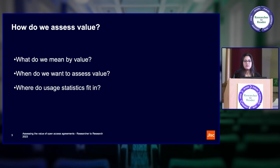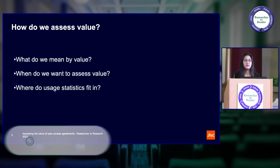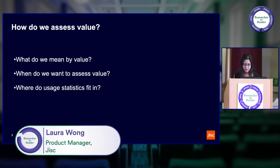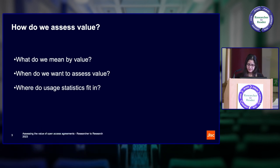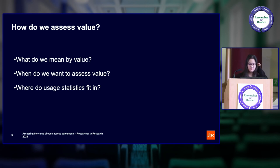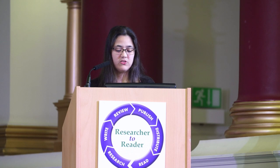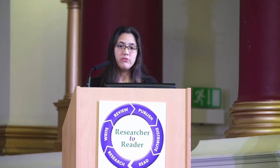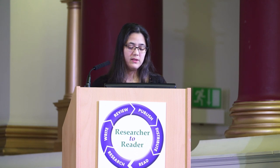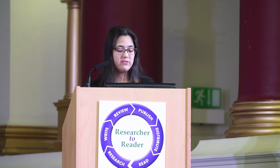Firstly, there's the proposal stage. At this point we are really looking to support our conversations with publishers and librarians, and this may go through several iterations. We're really trying to make predictions about potential future value and benefits based on past data, at both a sector level and institution level. When it comes to signing up, an institution needs to make a decision about whether they want to contribute to that initiative. Then finally there's the renewal stage where the publisher, JISC and the institutions all need to decide whether it's worth continuing with that deal.